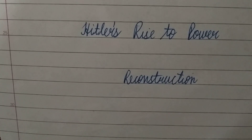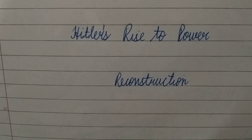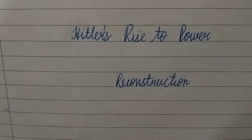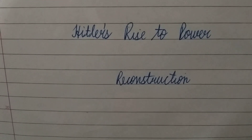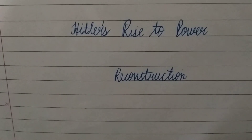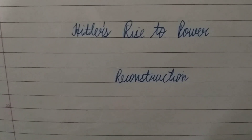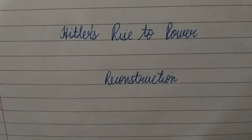Around this time, atomic bombs were dropped on Hiroshima and Nagasaki in Japan. With reconstruction underway, we now study what the Nazi society was like and what their worldview was.